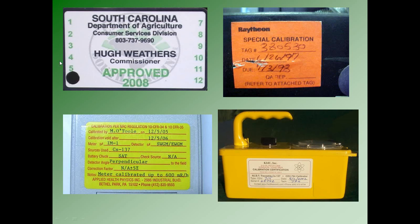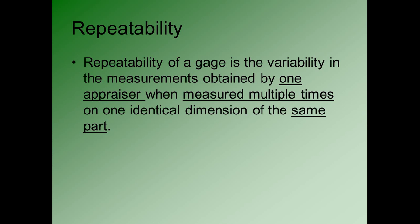Here is a tag from a gas pump in South Carolina, and here are some examples of calibration tags on instruments on the factory floor. These tags are important because they allow anybody to check whether or not an instrument has been calibrated recently.